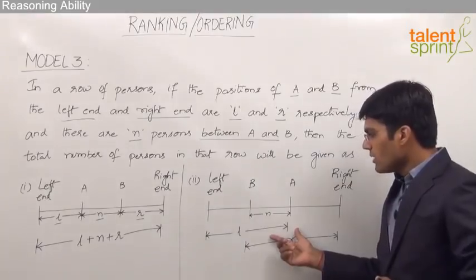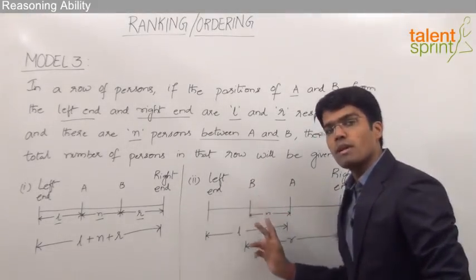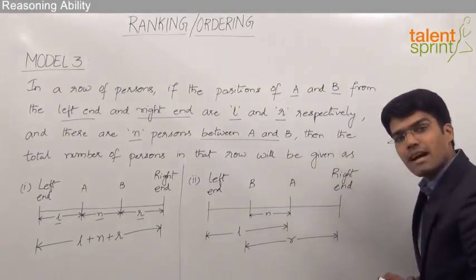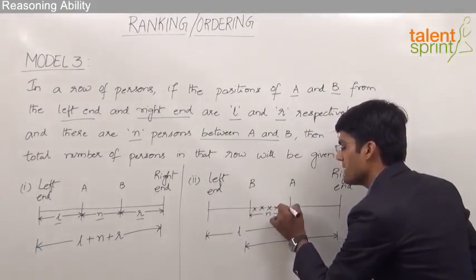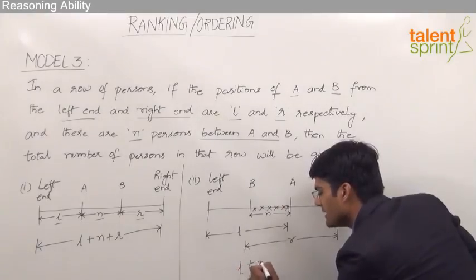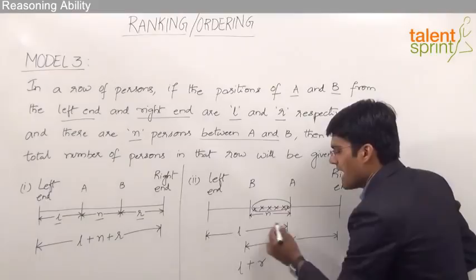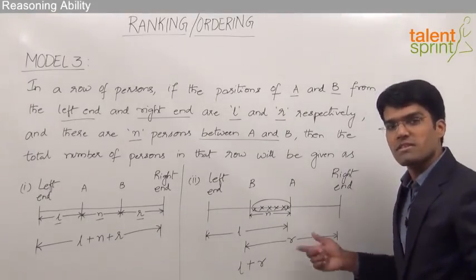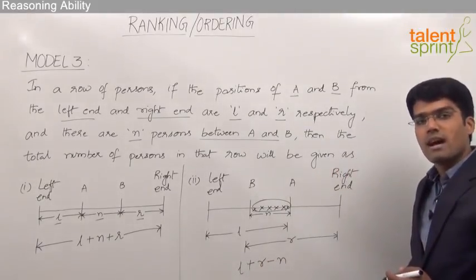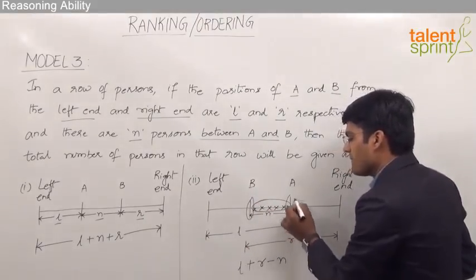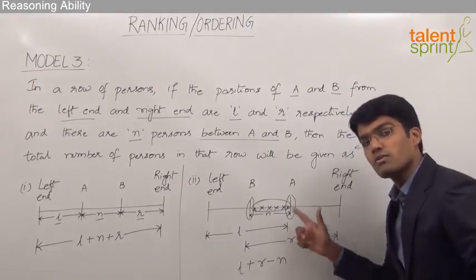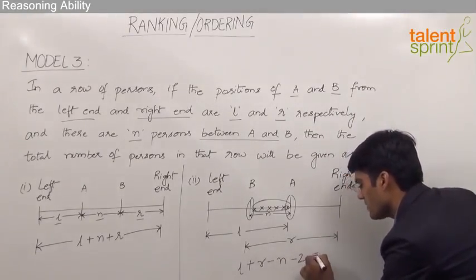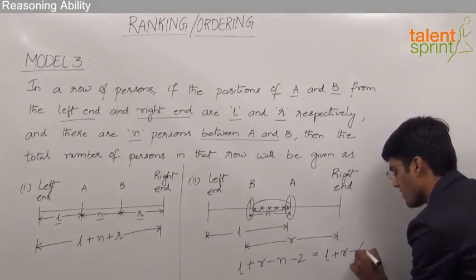In case 2, A is closer to the right end and B is closer to the left end. The position of A from the left end is L and the position of B from the right end is R, with N persons in between. When we add L plus R in this case, the persons between A and B have been counted twice, so we subtract N. Also, persons A and B themselves have been counted twice in the sum L plus R, so we subtract 2 more. Therefore, the total number of persons in this case is L plus R minus (N plus 2).